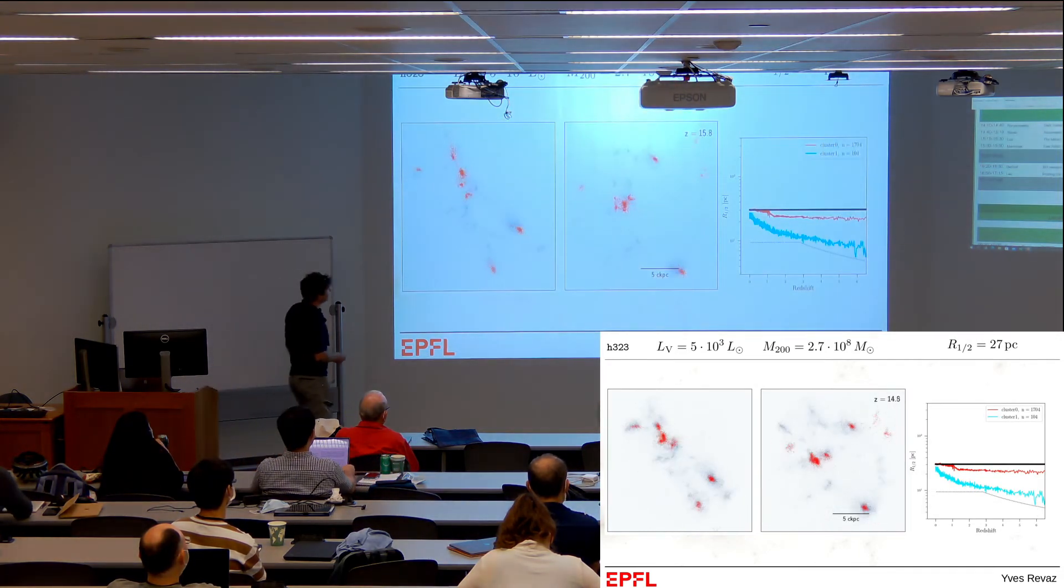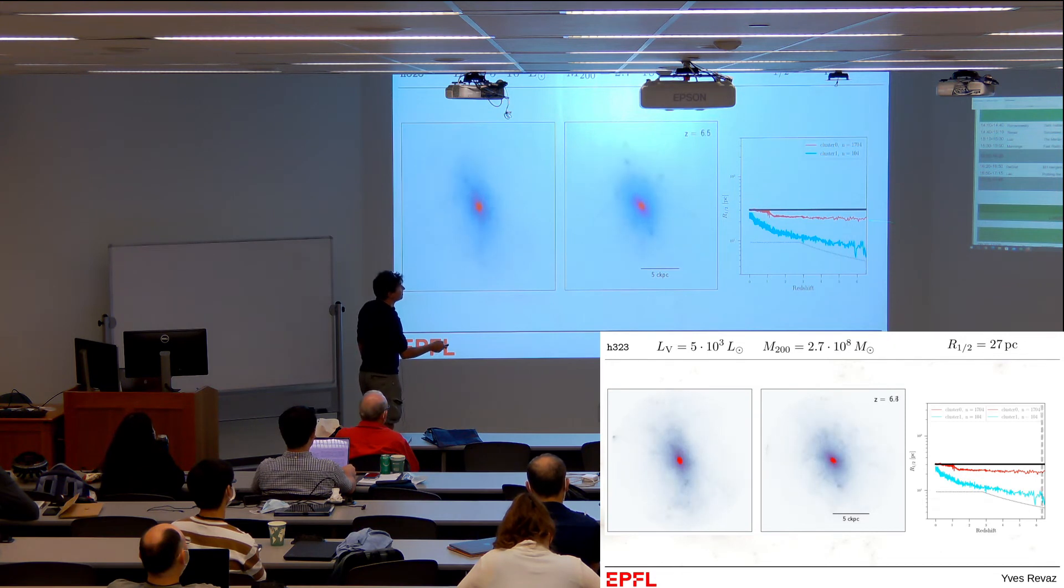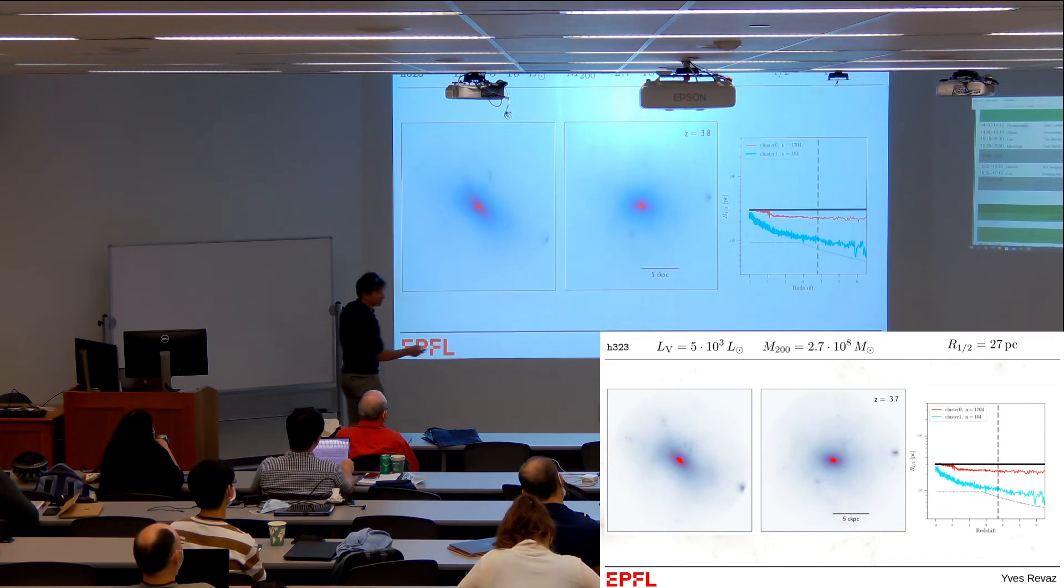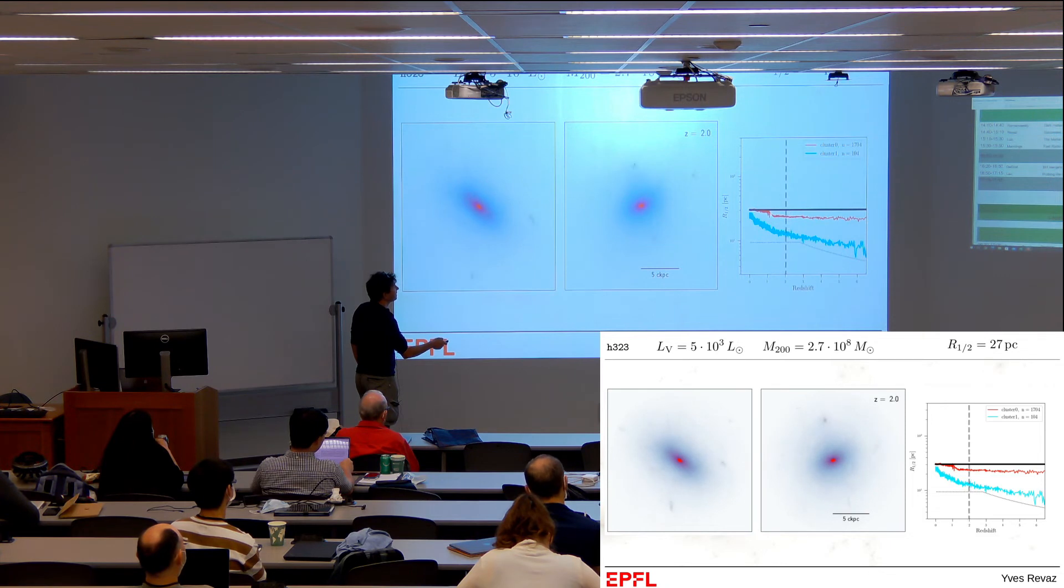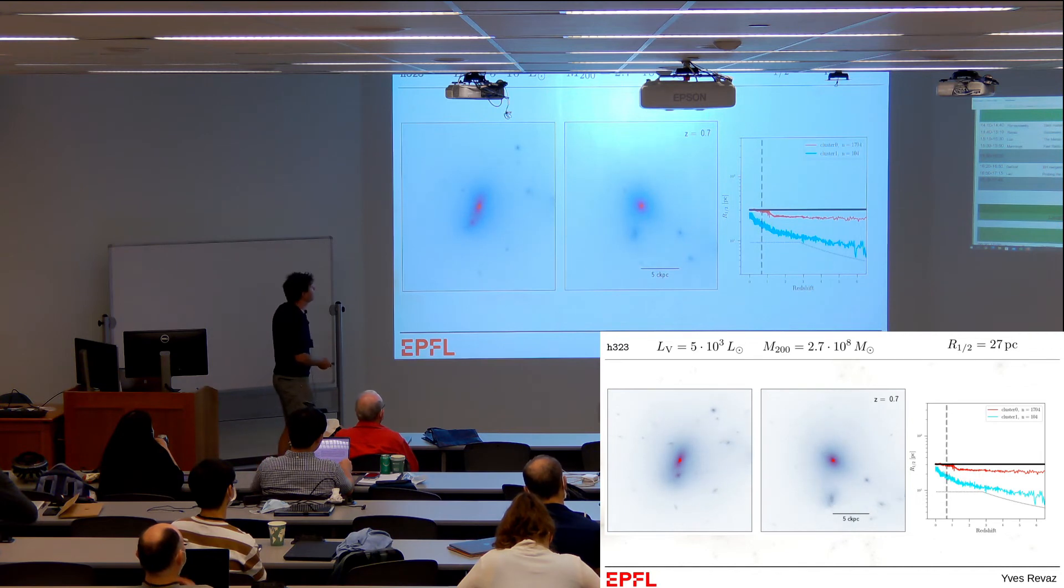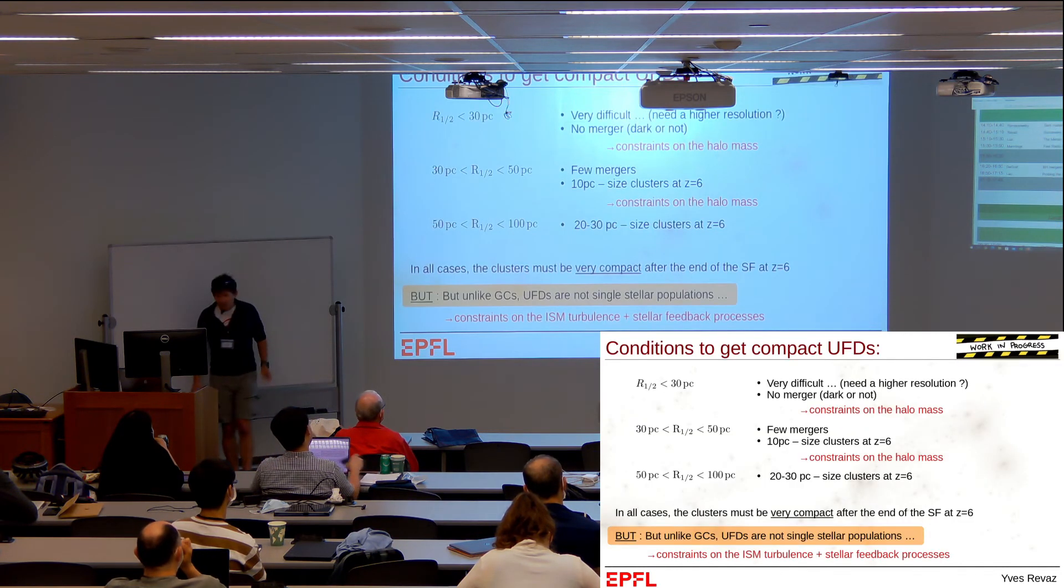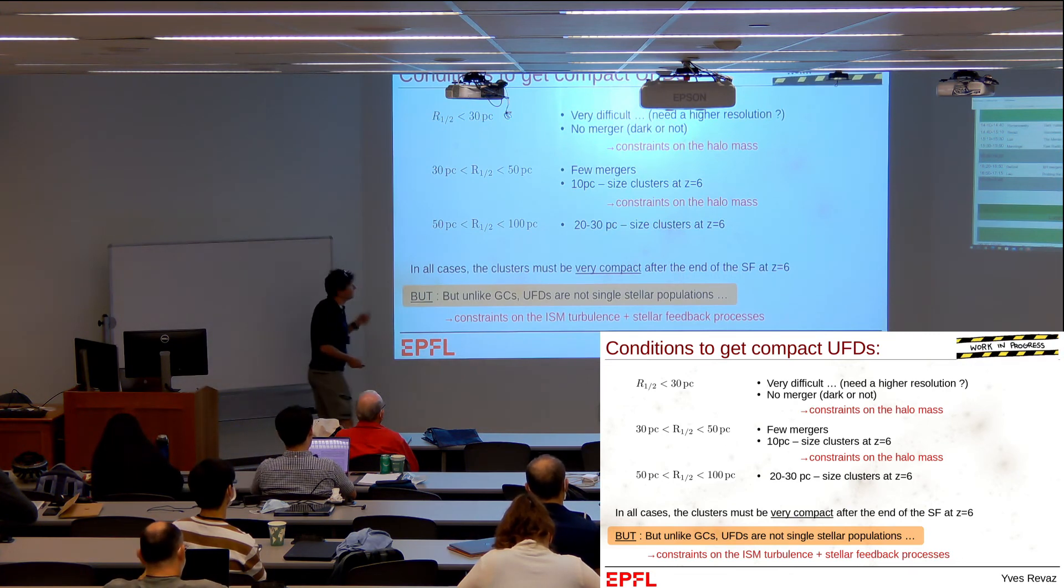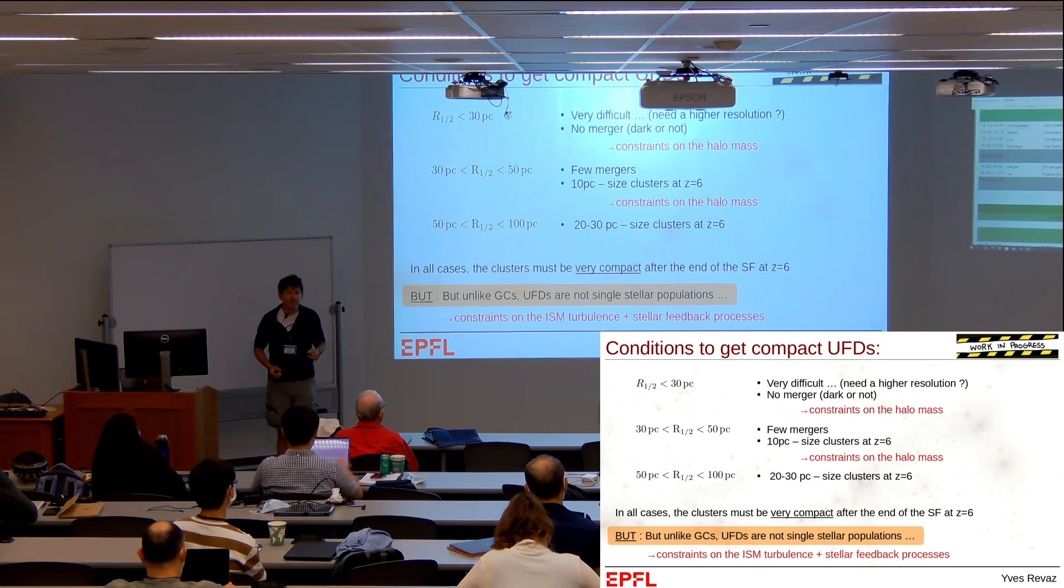There's another system made out of only one cluster. Forget about this other one—at the end it doesn't merge with the main one. You see the size is nearly constant until redshift one, where suddenly you have a strong increase due to merger with a completely dark halo. Simply merger with dark halos increases the size of the system. These are really preliminary results, so be careful. But what I learned is that it's super difficult to obtain extremely compact objects in a hierarchical scenario.